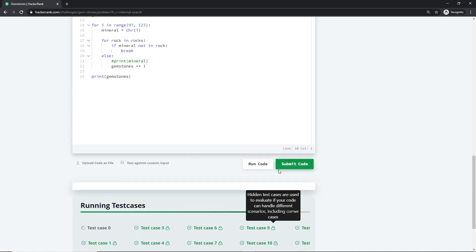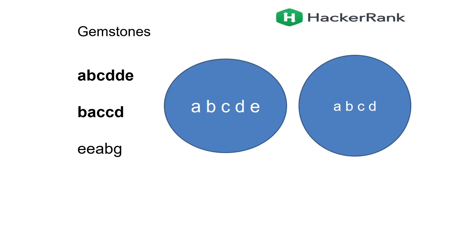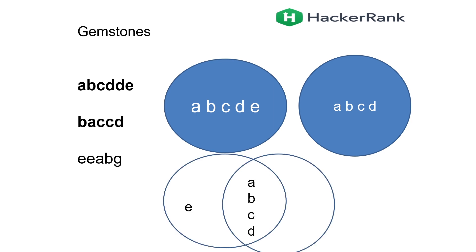Now there is another method. We can basically use a data structure called a set. When you use a set, remember, if there is any mineral occurring multiple times in the same rock, those duplicates will be removed. So converting to a set: D was occurring twice, so the duplicate is removed. C was occurring twice, those duplicates are removed. What I will try to do is perform an intersection of these two sets to find the common minerals.